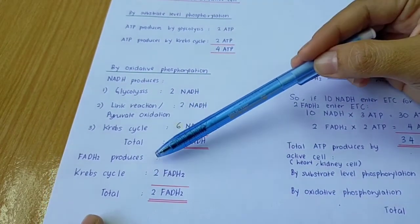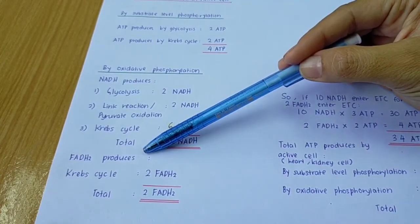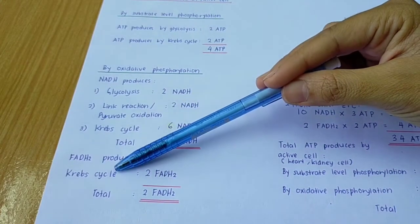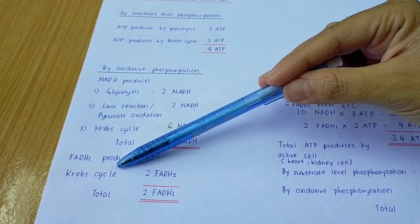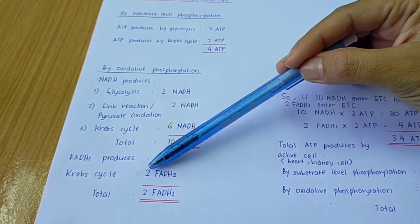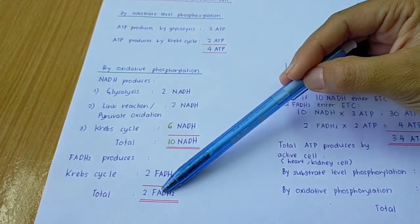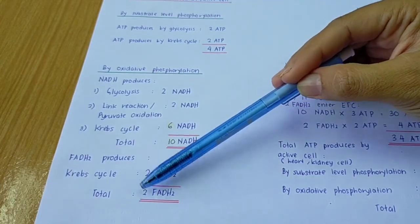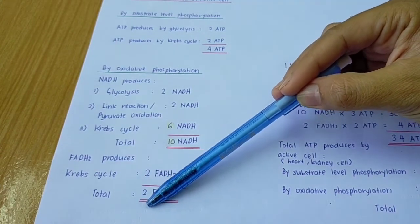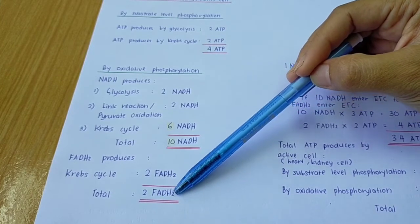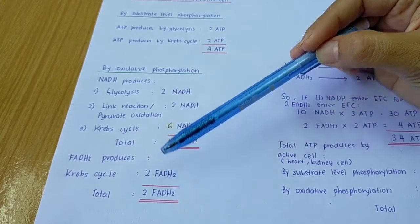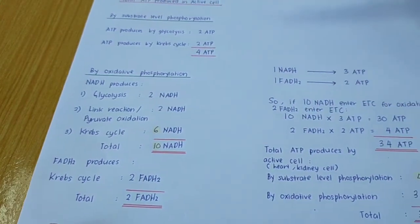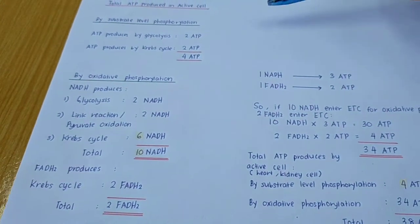For FADH2, it is only produced by the process of the Krebs cycle. From the Krebs cycle, it will produce 2 FADH2. So the total FADH2 that will enter the electron transport chain is 2 FADH2.